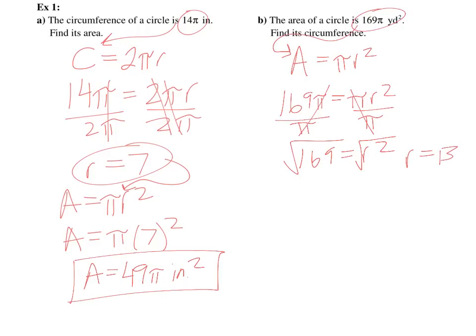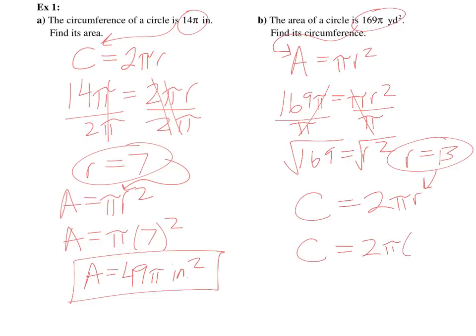Now I need to figure out the circumference. Circumference equals 2 pi r. So we plug r in — circumference is equal to 2 pi times 13. So circumference is equal to 26 pi, and it's going to be yards. Done.